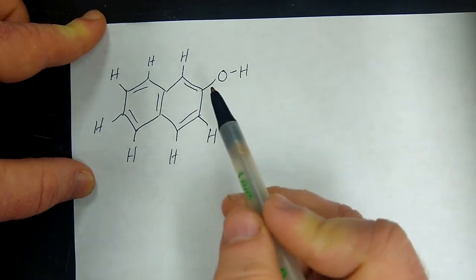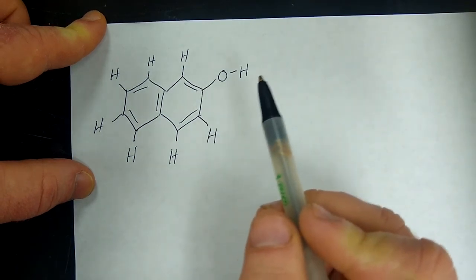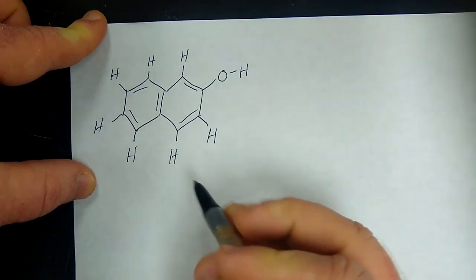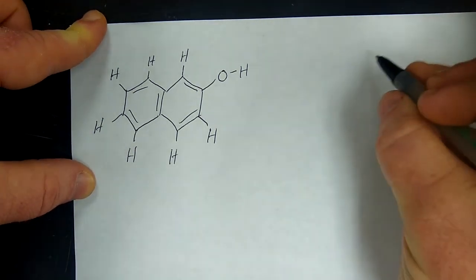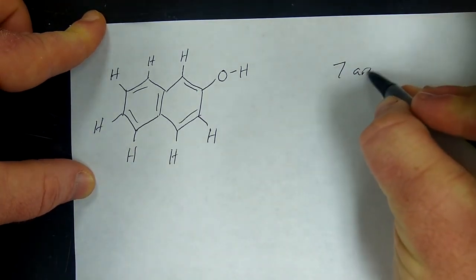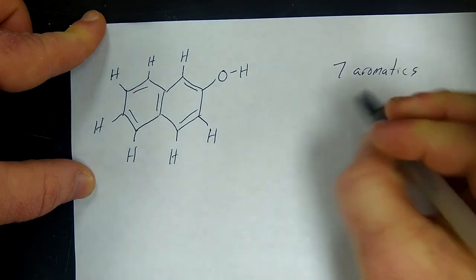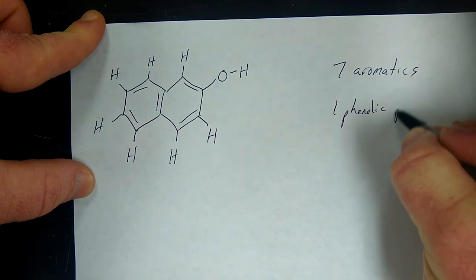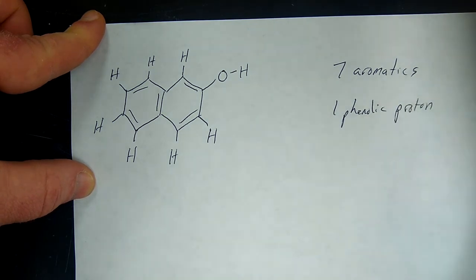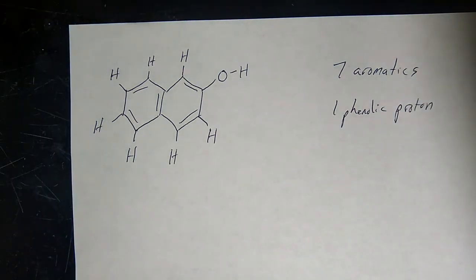Now we can look at when we look at the NMR, we'll be looking for seven aromatics and then one phenolic proton. So now we'll look at the spectra.